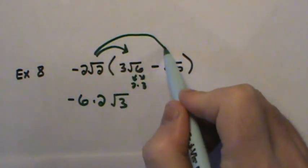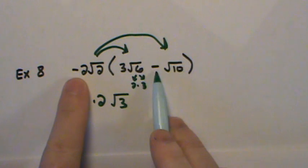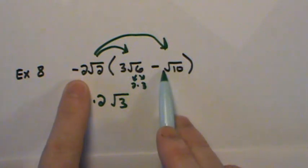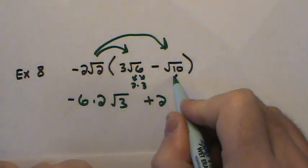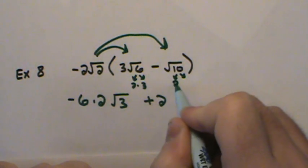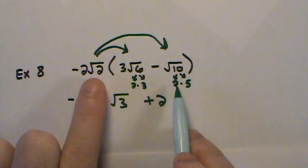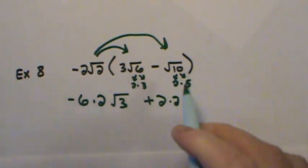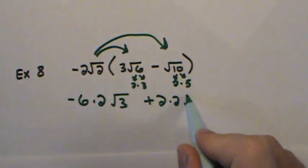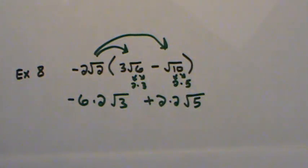Then I begin again. Start with my signs. A negative 2 times a negative 1 would be positive 2. And then the 10, just like the 6, can be broken down into 2 times 5. So I'm looking at this pair, recognizing that I can bring a 2 out. And this 5 stays under the radical. I'll obviously have to simplify this. So negative 6 times 2 would be negative 12√3 plus 4, 2 times 2 is 4, √5.